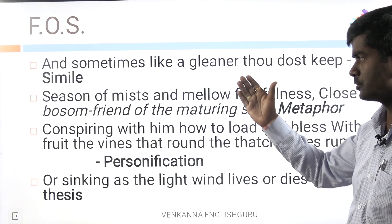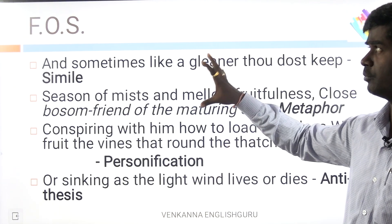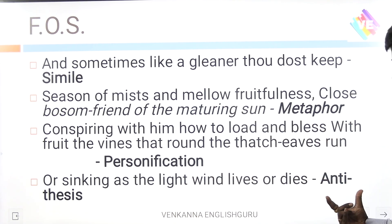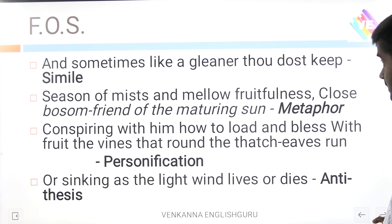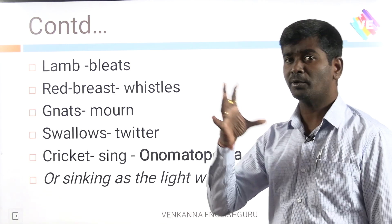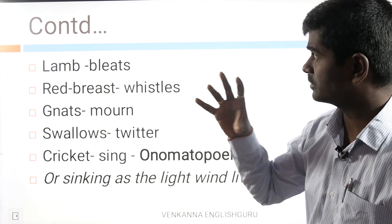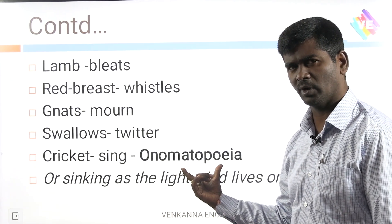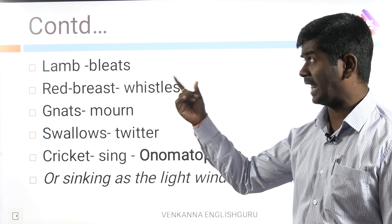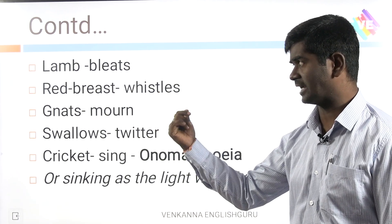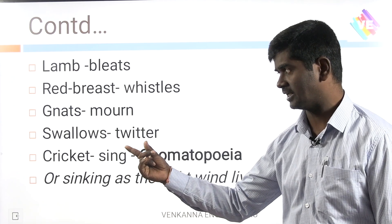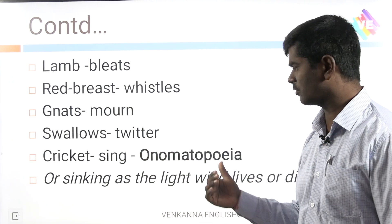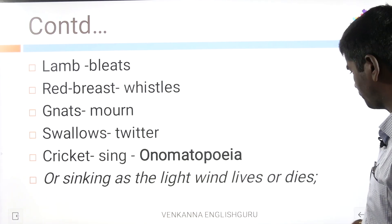You should also know the important figurative expressions: examples for simile, personification, metaphor, and antithesis. Next, the important images adapted by the poet. Words like lamb, blades, redbreast, whistles, gnats, mounds, swallows, pitfall, twitter, cricket, swing, and sing — all these are best examples for echoism, or onomatopoeia.